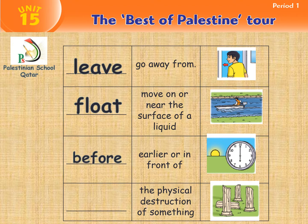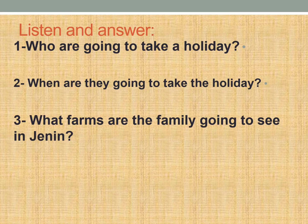The physical destruction of something — ruin. Now we are going to listen to the text in exercise 2. Books closed. We are going to listen and try to find the answers: number one, who are going to take a holiday? Number two, when are they going to take the holiday? Number three, what farms are the family going to see in Jenin?